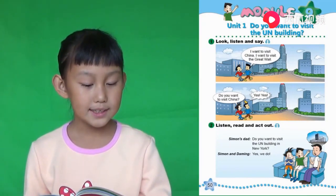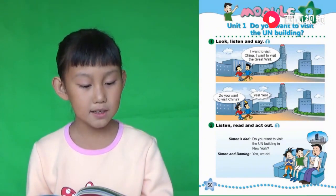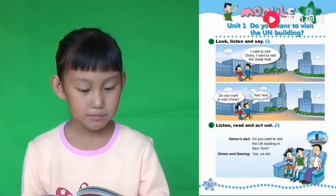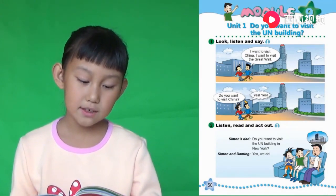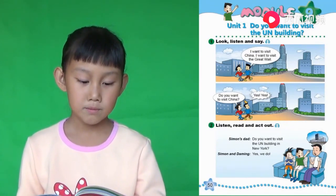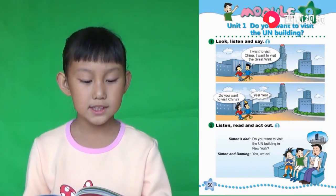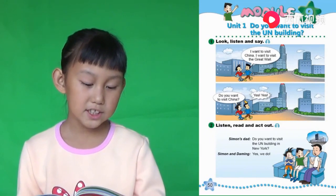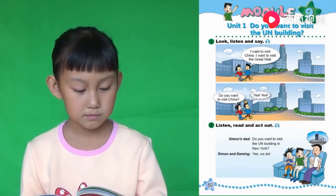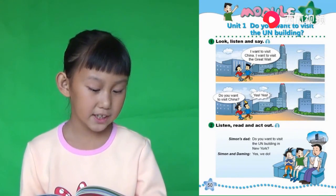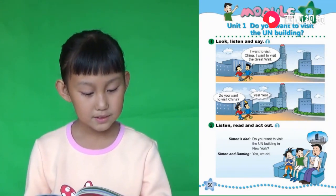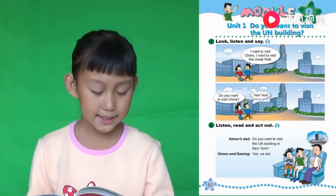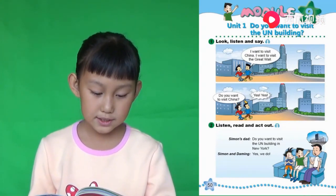1. Look, listen, and say. I want to visit China. 我想去参观中国. I want to visit the Great Wall. 我想参观长城. Do you want to visit China? 您想去中国旅行吗? Yes, yes. 是的,是的.